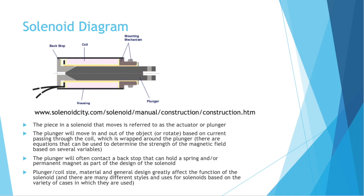Let's talk about the components of a solenoid and what they are called. The object within the coil that actually moves is referred to as the actuator or the plunger. The plunger will move in and out or rotate based on the current passing through the coil wrapped around it. Different applications require the plunger to move different lengths or at different strengths, and a lot of this strength is determined by the coil — how many turns, what the material is, how tightly it's wound, etc. The plunger will often contact a backstop that can hold a spring or a permanent magnet or both. Everything is held within the solenoid frame, and there are often housing components that allow you to attach the solenoid to an object so it can perform its job.